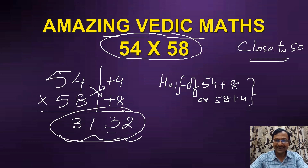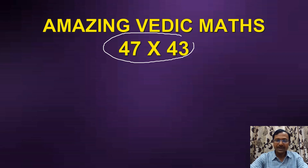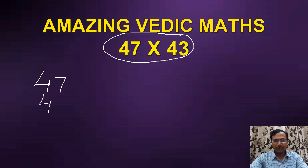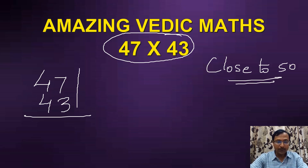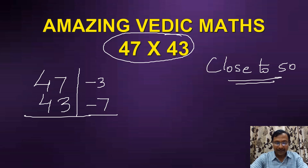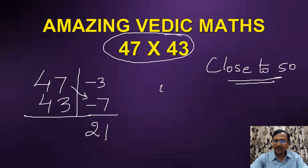Let's take one more example using numbers which are below 50 — 47 and 43. The numbers are again close to 50. The first step: how much below 50 is 47? It is 3 below 50, so I'll write that as negative 3. And 43 is 7 below 50, so I'll write that as negative 7. The product of negative 3 and negative 7 is 21, and it's a positive number. Since it's already two digits, I don't need to prefix a zero. Now, 47 minus 7 is 40, and 43 minus 3 is again 40, and half of that is 20.